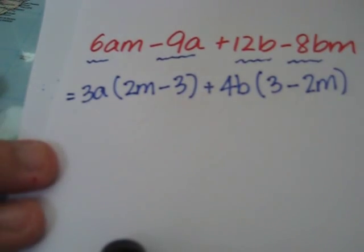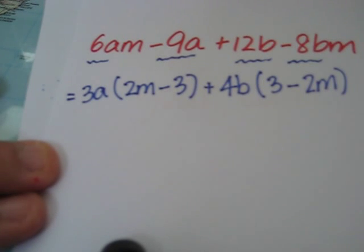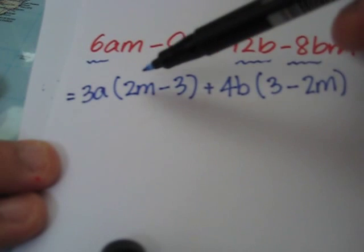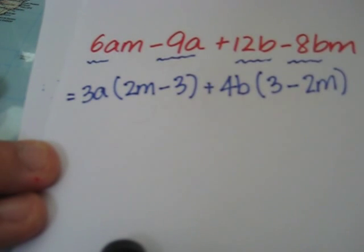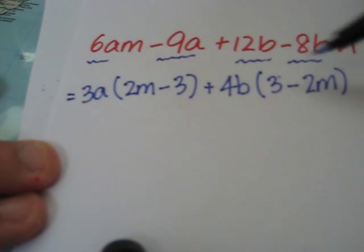It seems like these two huge terms do not have any common factors. However, if we take a closer look, here we have 2m minus 3. Here we have 3 minus 2m. The terms are the same, except that the signs are different.